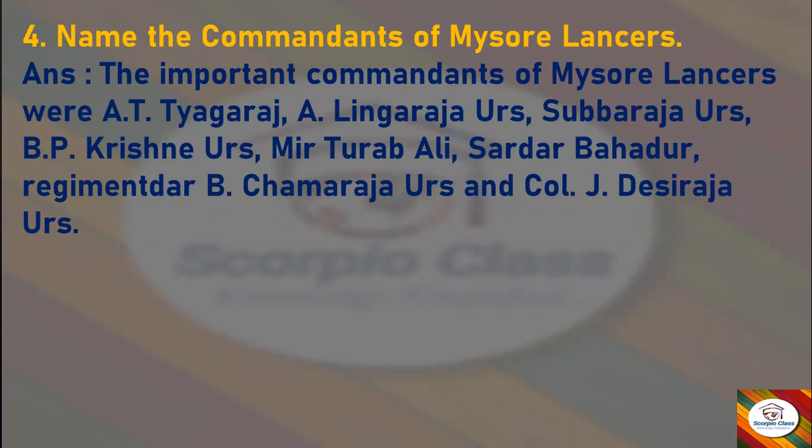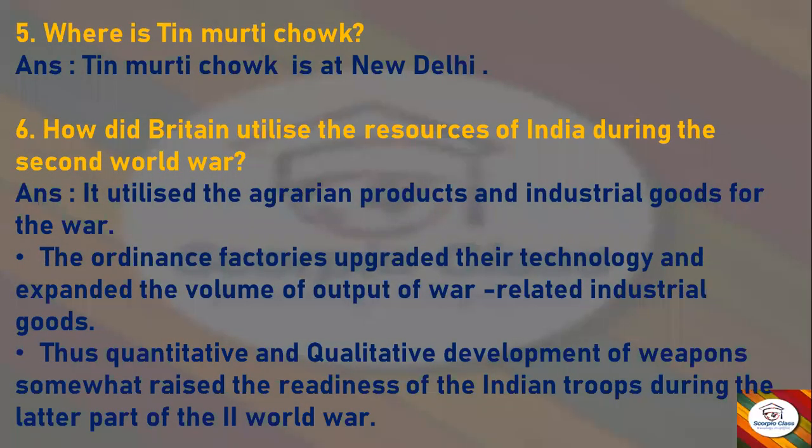Next question: Where is Tin Moorthy Chog? Answer: Tin Moorthy Chog is at New Delhi. Next: How did Britain utilize the resources of India during the Second World War? Answer: It utilized the agrarian products and industrial goods for the war. The ordnance factories upgraded their technology and expanded the volume of output of war-related industrial goods. Thus, quantitative and qualitative development of weapons somewhat raised the readiness of the Indian troops during the latter part of the Second World War.